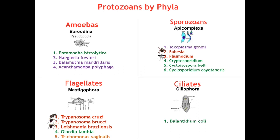Now if we focus on the GI parasites, which are green, not only do they share the same primary site of symptoms, they also share the same route of entry, which is ingestion. They all have different forms which we ingest, which I will go over later. For now, realize that they're all GI parasites and they all share the same route of entry — ingestion, typically in feces-contaminated water.